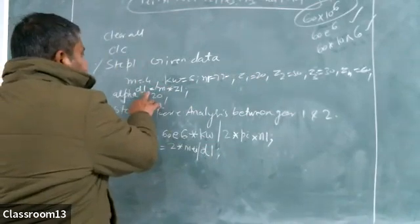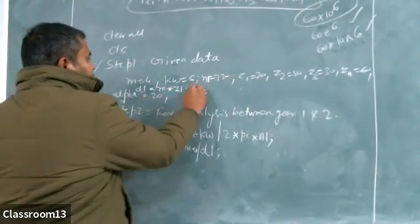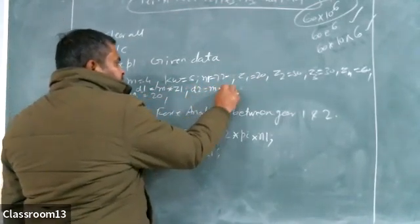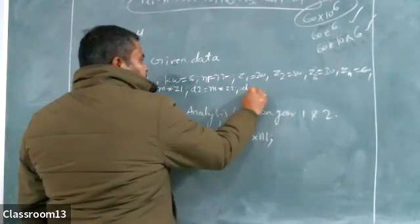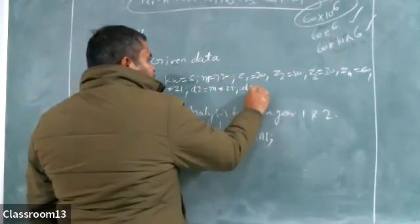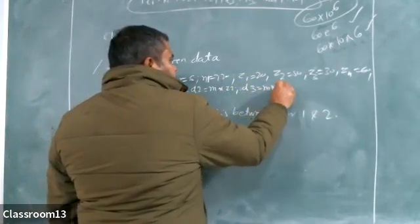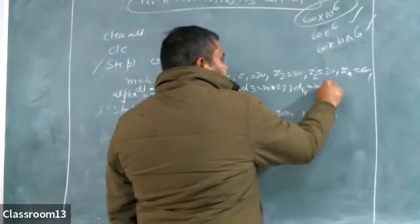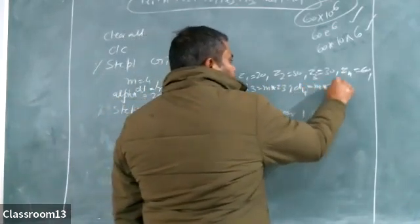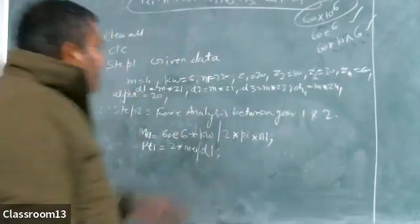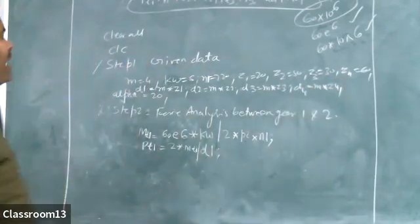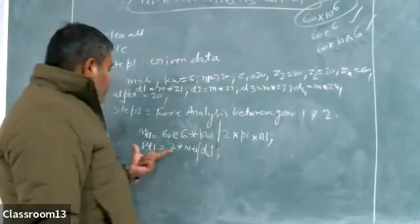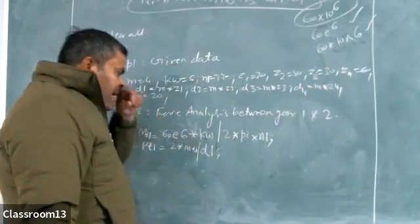Similarly, as I have calculated D1, I can find D2 = M × Z2, D3 = M × Z3, and D4 = M × Z4. Pt1 part is complete.